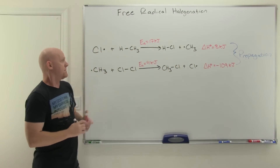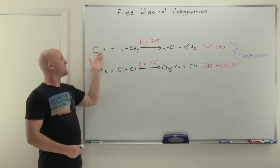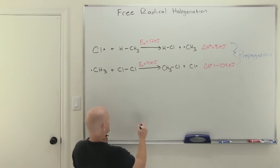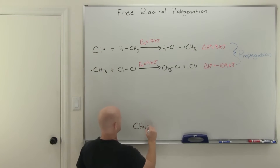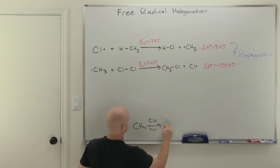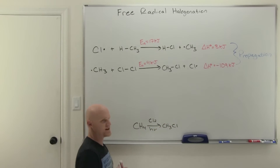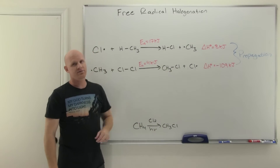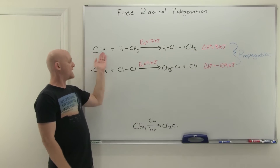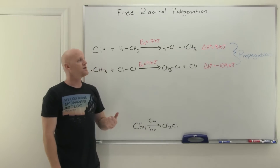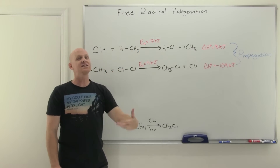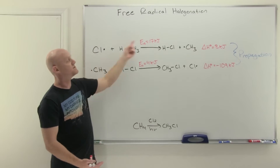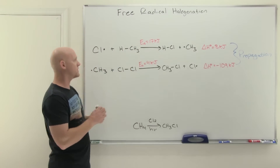We've got a problem here, though, because I'm saying we've got a chlorine radical to start with - but we don't. If we drew out the net reaction, it would be methane hit with Cl2 and light to form CH3Cl. We didn't start with any Cl radicals; we started with Cl2. So it turns out before you can do the propagation, you've got to initiate the reaction. In the initiation step, your goal is to form the radical you need to start this sequence of propagation steps that'll just keep repeating.